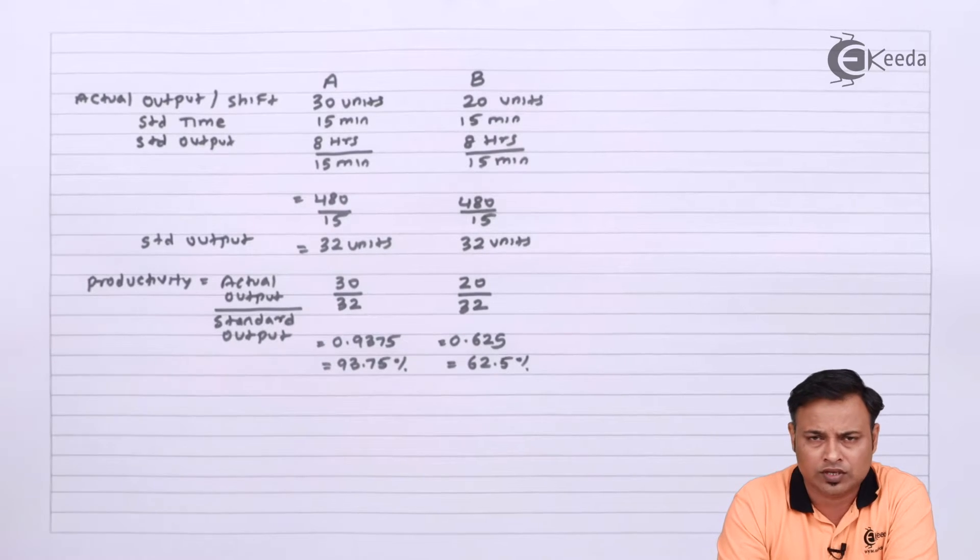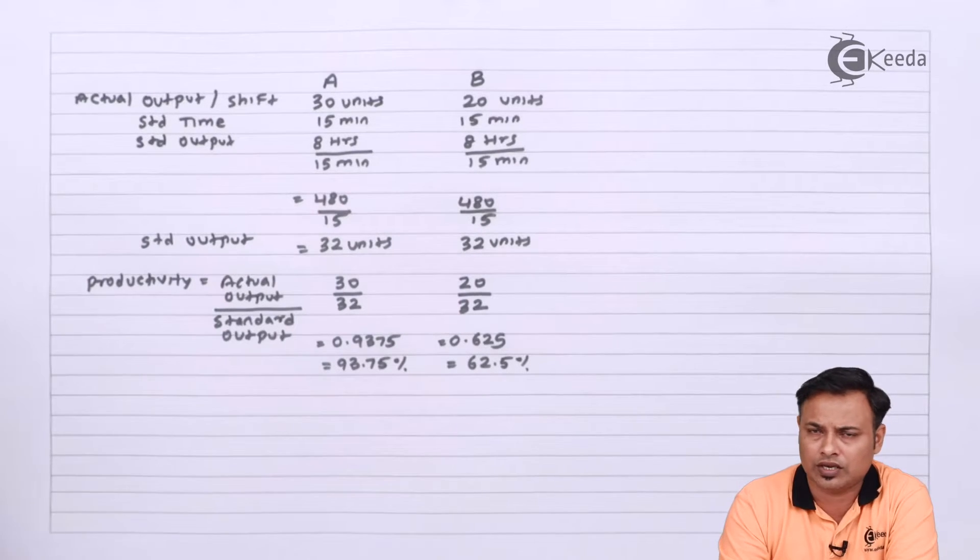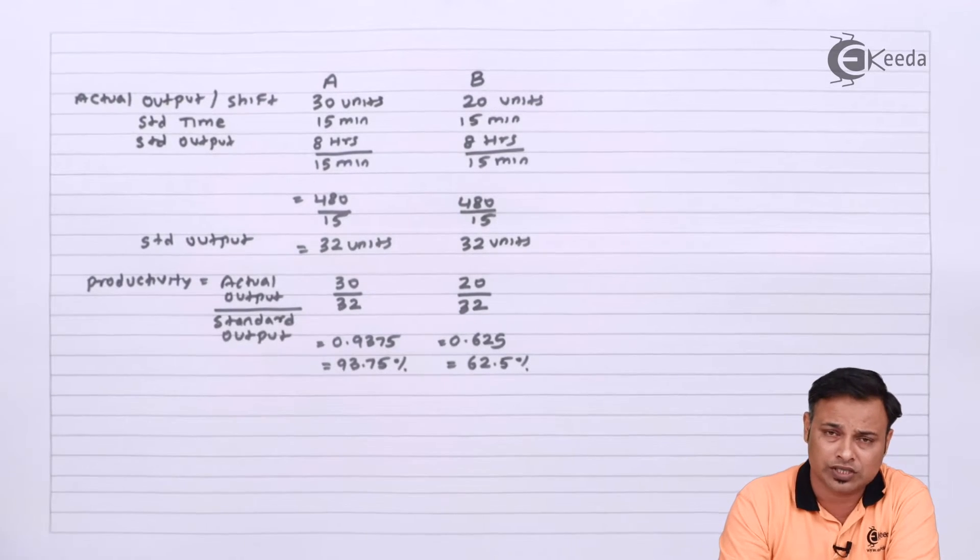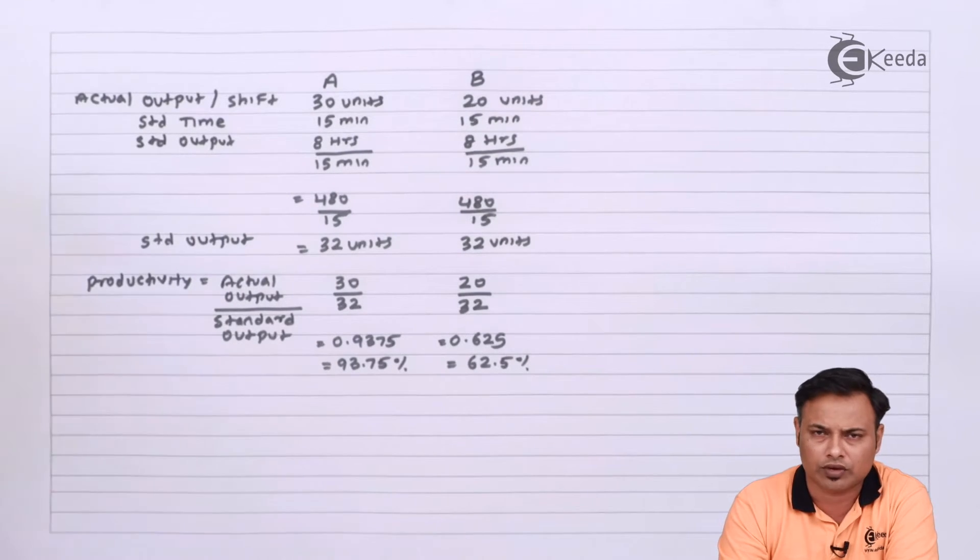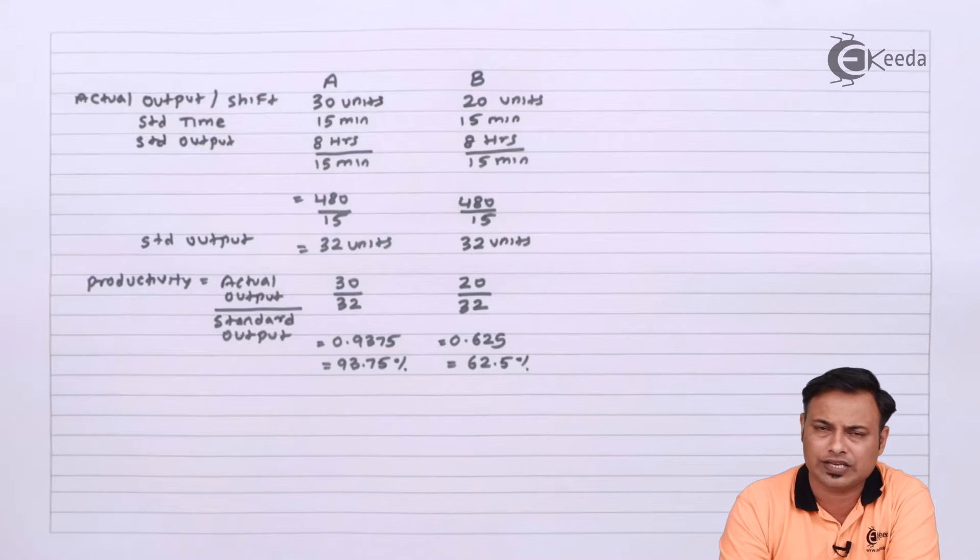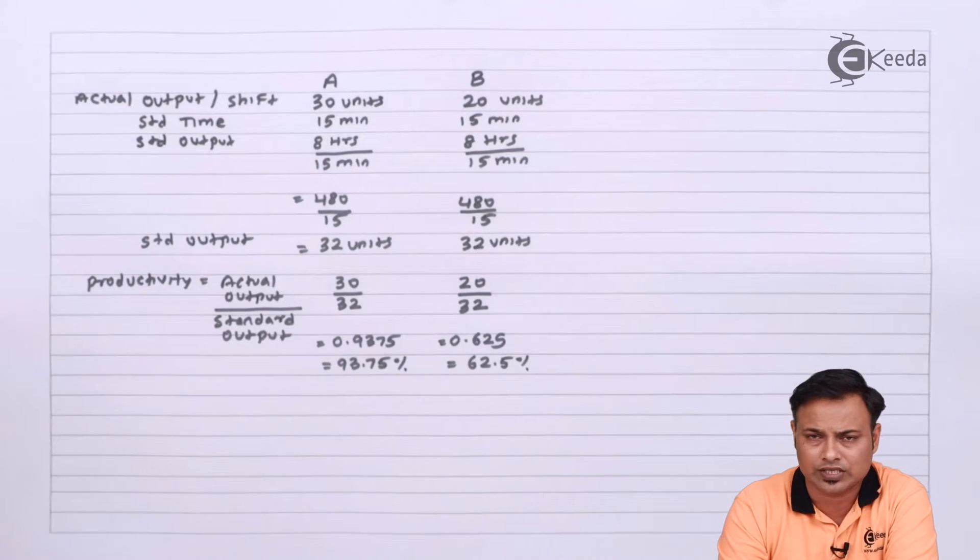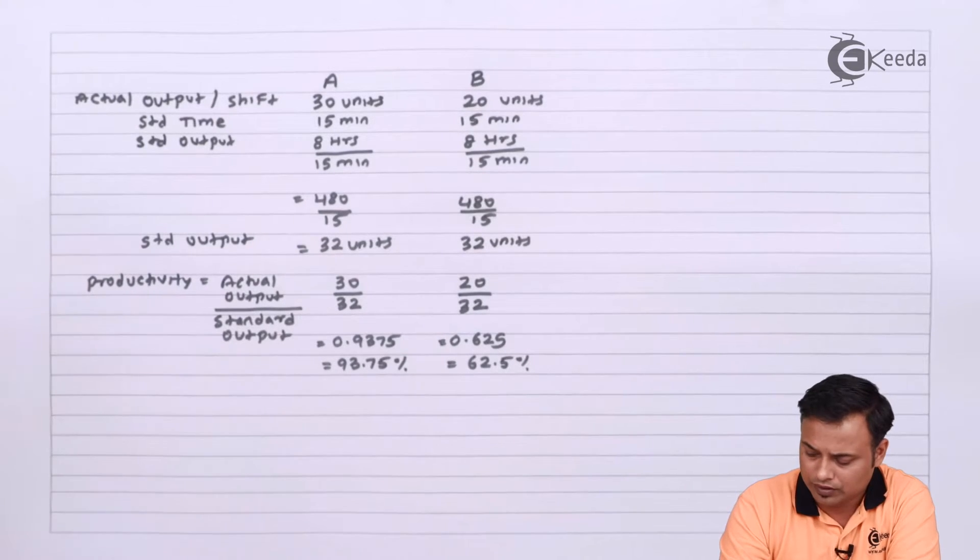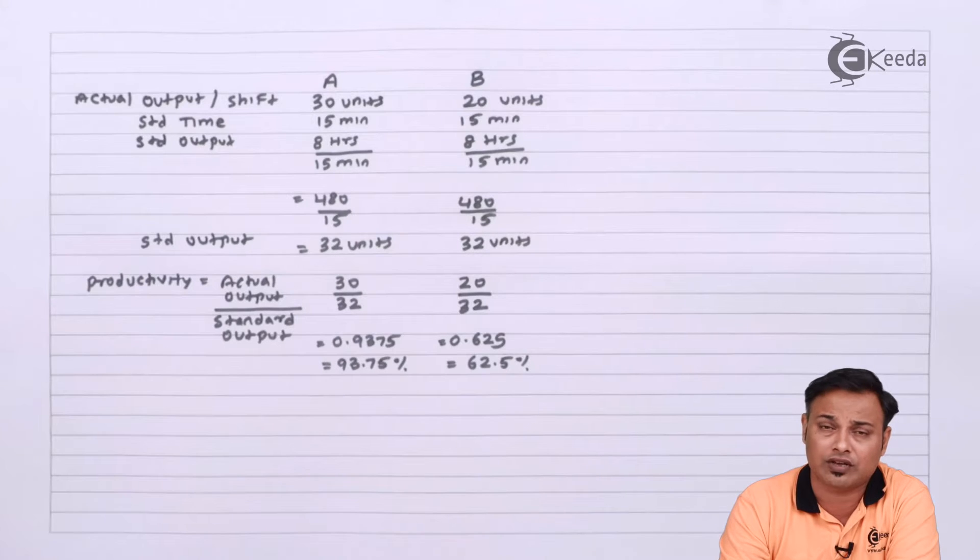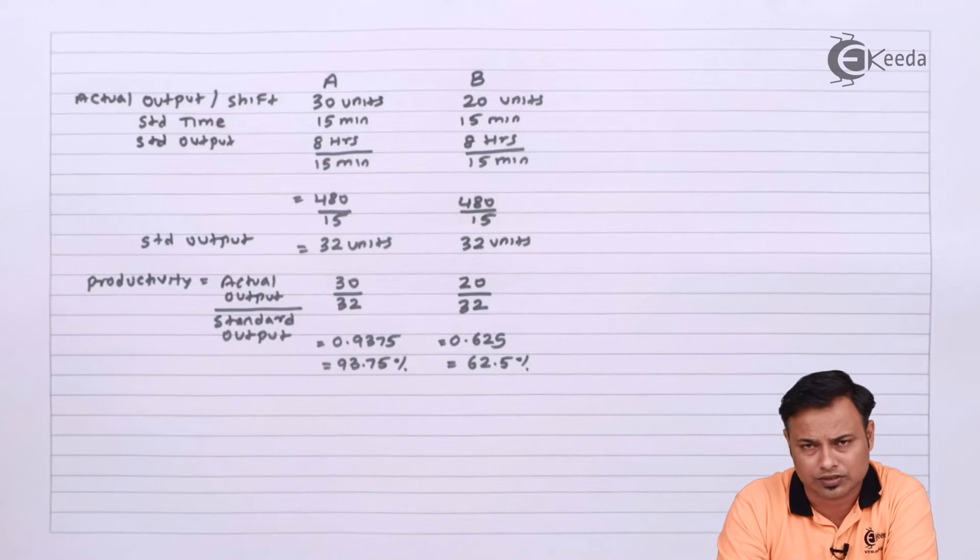Whenever you are confused should I calculate in percentage or not, don't calculate at all. In case it was not needed and you multiplied by 100 and converted the numbers into percentage you might get it wrong. In case it was needed and you didn't multiply by 100, still your answer 0.625 is perfectly okay. Just for the sake of convenience and understanding we converted the productivity into percentages.